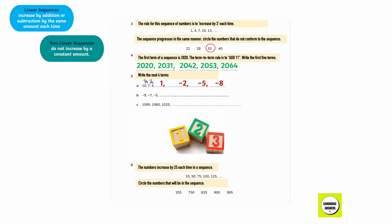For the sequence minus 9, minus 7, minus 5: the difference between minus 7 and minus 9 is positive 2, and the difference between minus 5 and minus 7 is again 2. So we add 2 to negative 5 to get minus 3, then minus 3 plus 2 gives minus 1, minus 1 plus 2 gives 1, and 1 plus 2 gives 3.